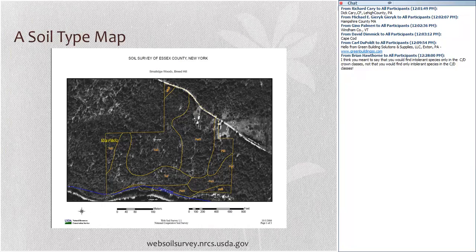Taking this further, we can look at soils and create a soil type map. This is a soil map for our property in the eastern Adirondacks.